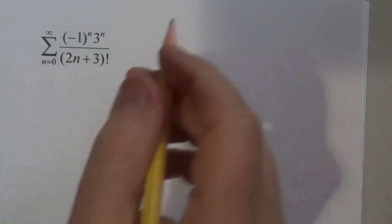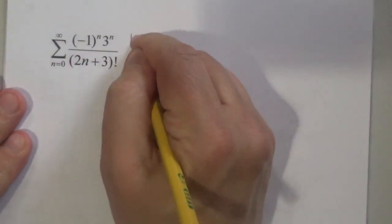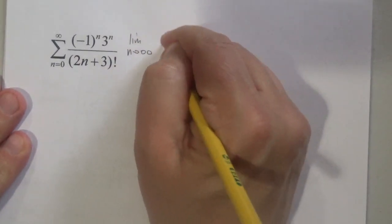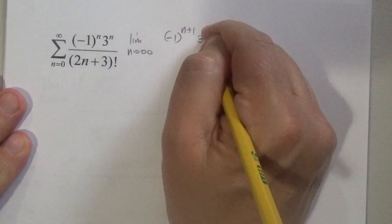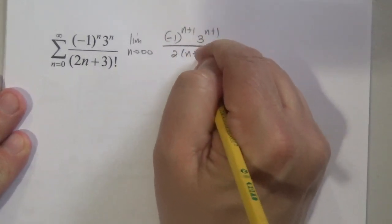Okay, again factorial, clearly ratio test. So let's get to work here. The limit as n approaches infinity: negative 1 to the n plus 1, times 3 to the n plus 1, over 2 times (n plus 1) plus 3 factorial.